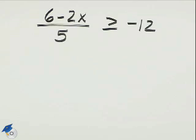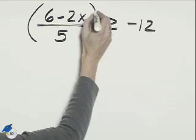We'll start solving this inequality by multiplying both sides by 5. That will eliminate the denominator.